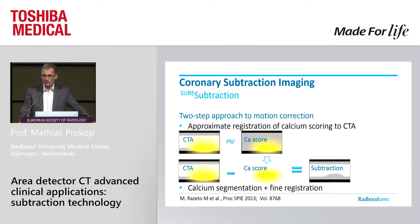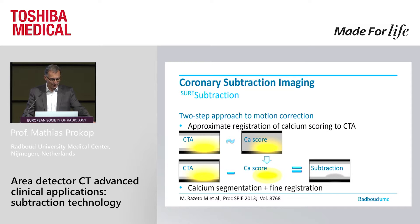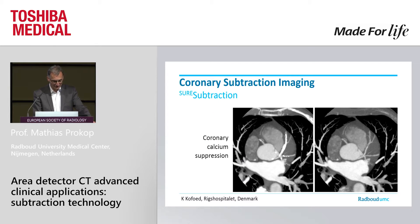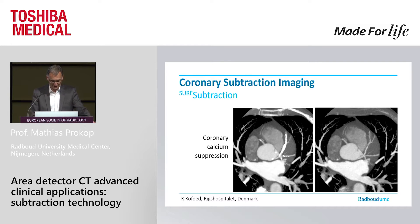Toshiba has gone one step further for the coronaries, where everything is more complex because we have small structures and quite a few problems. They have a two-step approach with an approximate registration of the CTA and a calcium score image. On this registered calcium score image, the calcium is segmented, including a bit of the blurring, and this is then subtracted. That gives a very nice subtraction result because an additional fine registration step corrects all the minor mistakes. In this patient with substantial calcium in the LAD and diagonal branches, we see it's completely removed, revealing a normal-sized vessel.